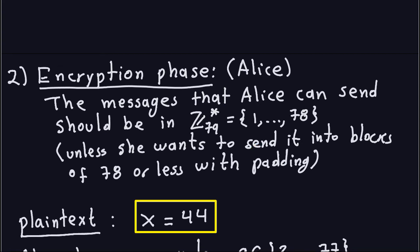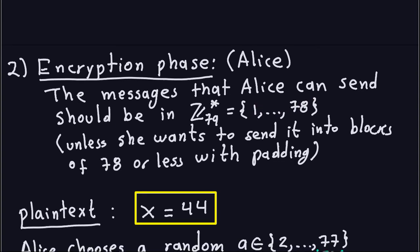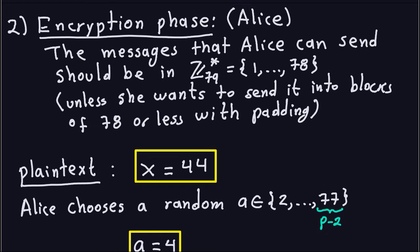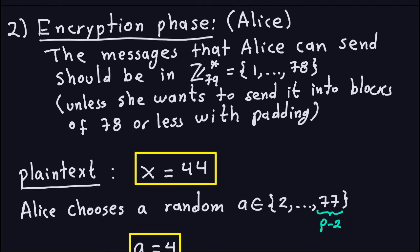To make this simple, we're going to use any number between 1 and 78. Let's suppose the plaintext that Alice wants to send is number 44, which could represent a letter or some kind of message. This particular case is just an example.